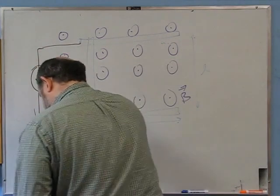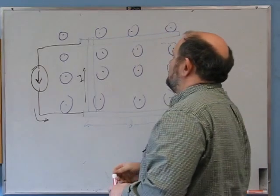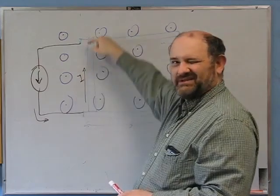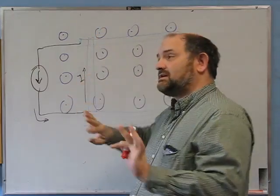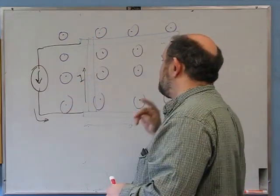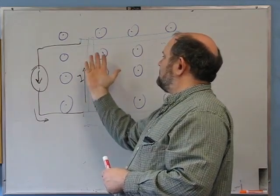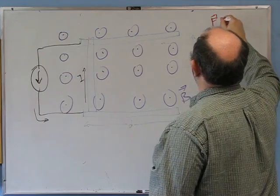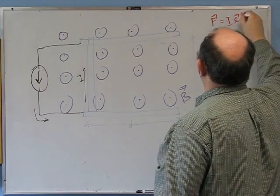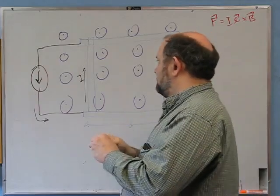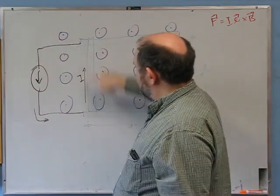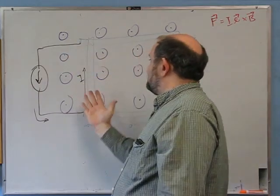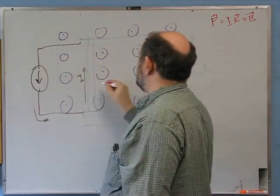Because there's a current moving, there are effectively positive charges moving this way — really electrons moving the other way, but we'll think about positive charges. The magnetic force on a length of current is IL vector cross B vector, where the L vector's direction is the direction of current flow. That tells us the force will be in this direction.